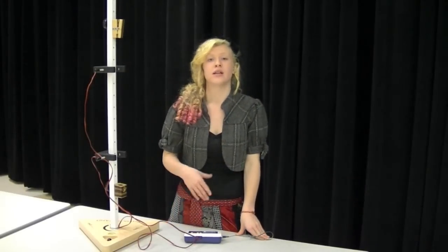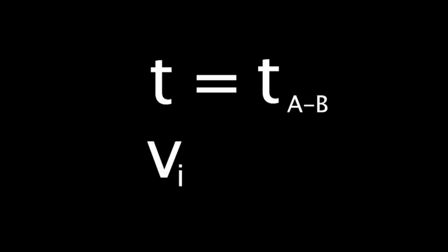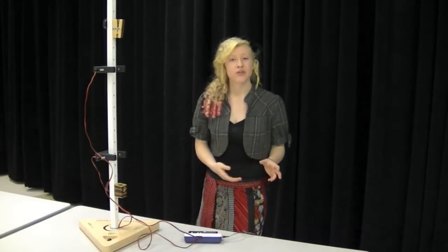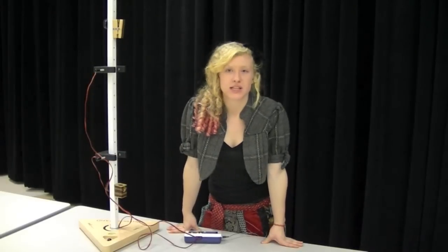For step six, you'll solve for G using the equation distance equals one-half AT squared plus VIT. Your distances will range from 15 to 50. T is going to be TAB and VI will be the average VA. Solve for all eight Gs and then average them. Once you have this average G, compare it to 9.8 meters per second squared using the percent difference equation.